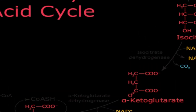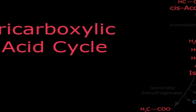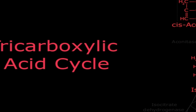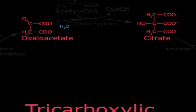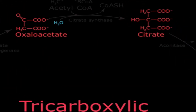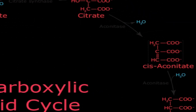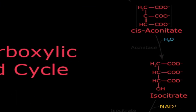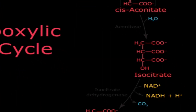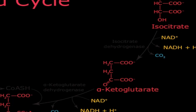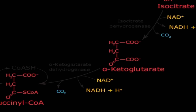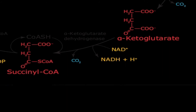To summarize from where we started: acetyl-CoA enters the Krebs cycle, combines with oxaloacetate, and gives citrate. Citrate is converted to cis-aconitate, then isocitrate, which undergoes oxidation to give alpha-ketoglutarate.